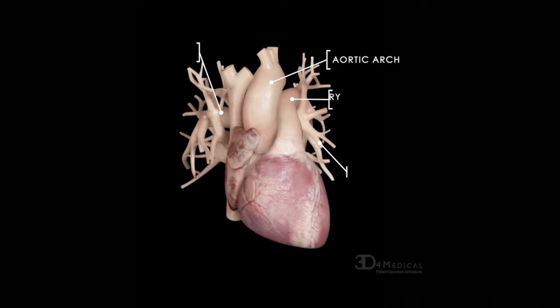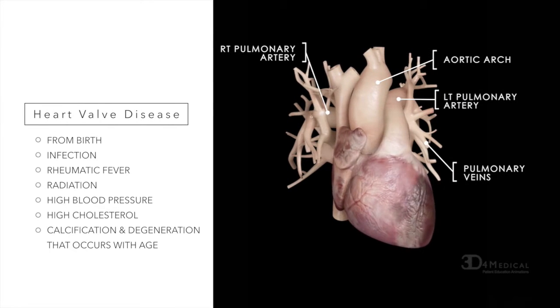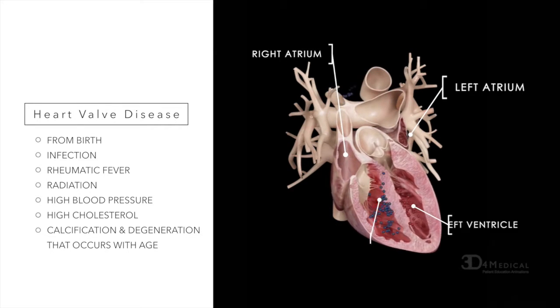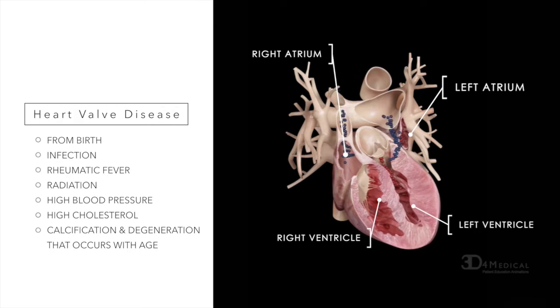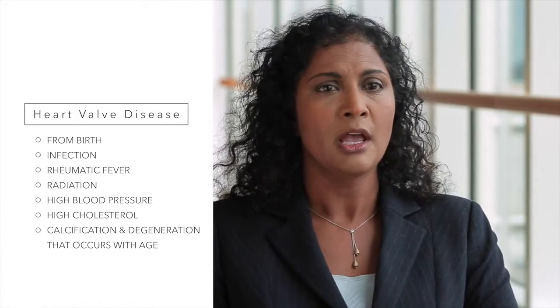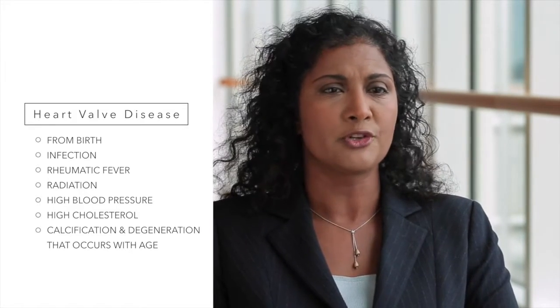The causes of heart valve disease are quite multiple. First, you could be born with an abnormal heart valve — a congenital abnormality — which would start in young childhood and progress through adulthood. You can also develop an infection on the heart valve, or rheumatic fever as a child or young adult. Other risk factors include radiation to the chest for certain cancers, which can damage the heart valves. Finally, more common risk factors are traditional ones like high blood pressure and high cholesterol.